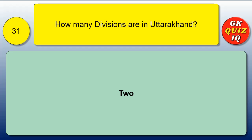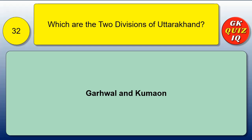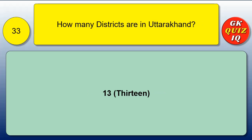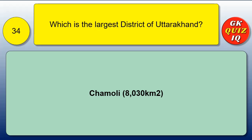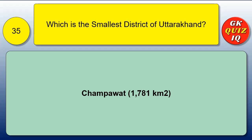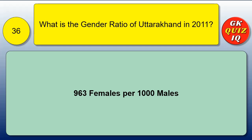How many divisions are in Uttarakhand? Two. What are the two divisions of Uttarakhand? Garhwal and Kumaon. How many districts are in Uttarakhand? 13. Which is the largest district of Uttarakhand? Chamoli. What is the gender ratio of Uttarakhand in 2011? 963 females per 1,000 males.